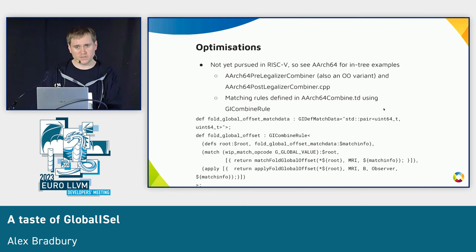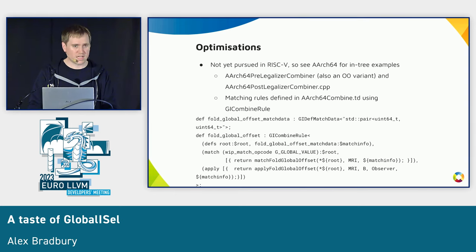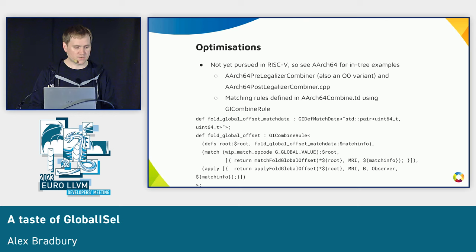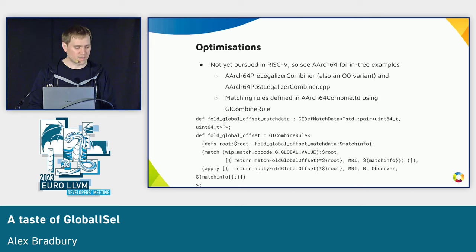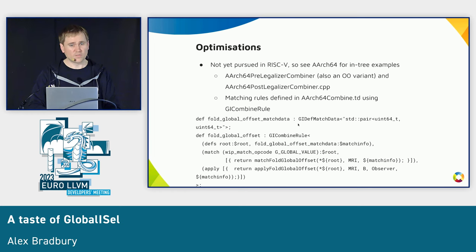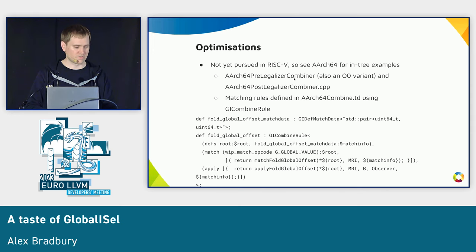For optimizations, AArch64 has some good examples — the pre-legalizer combiner and the post-legalizer combiner. There's also a mechanism to define part of the matching rules in TableGen, as seen in AArch64Combine.td, which performs folding of offsets to globals via matchFoldGlobalOffset and applyFoldGlobalOffset functions within the AArch64 pre-legalizer combiner file.